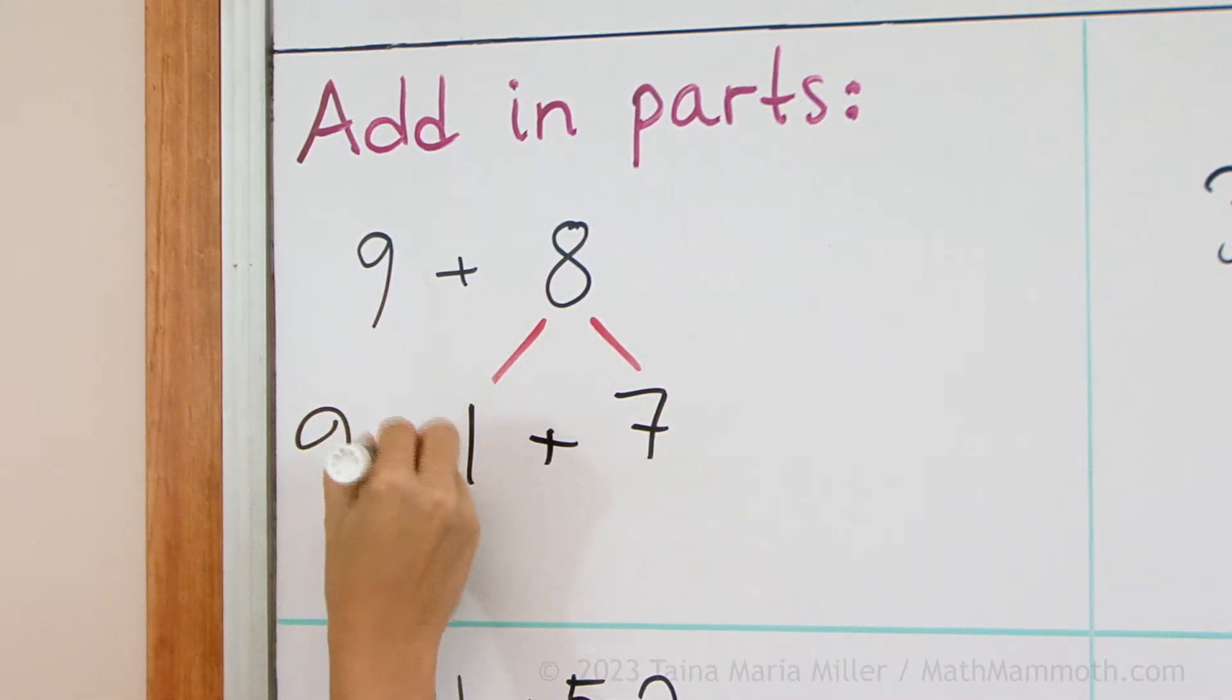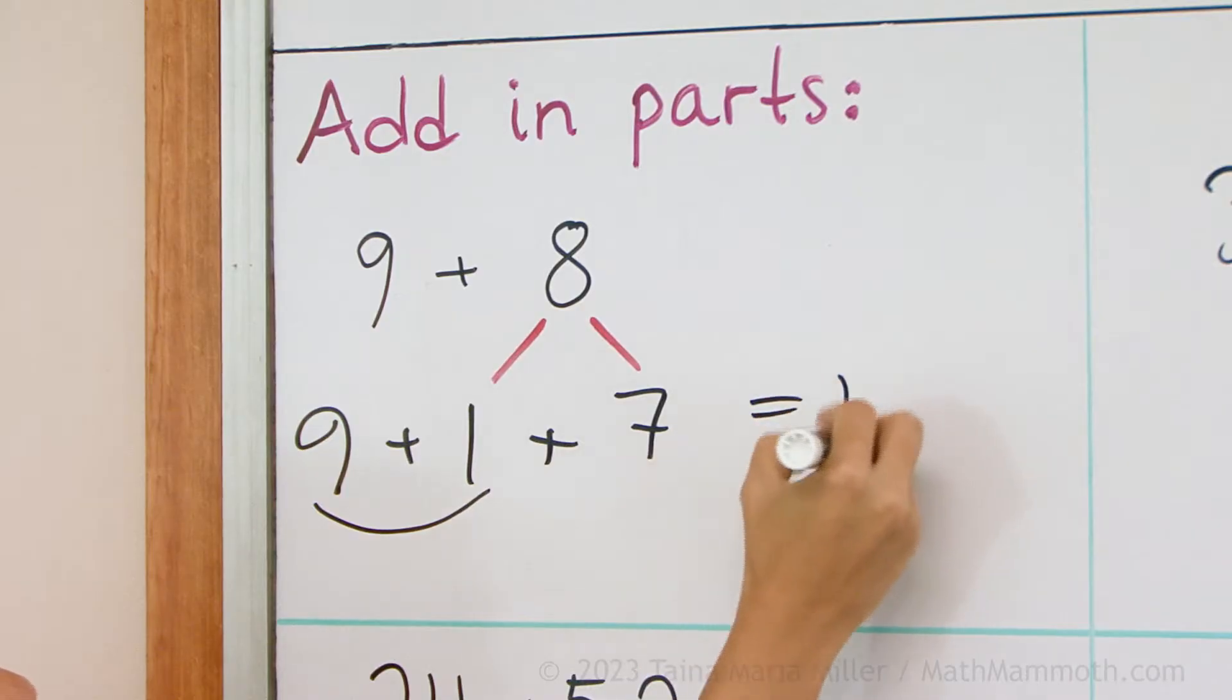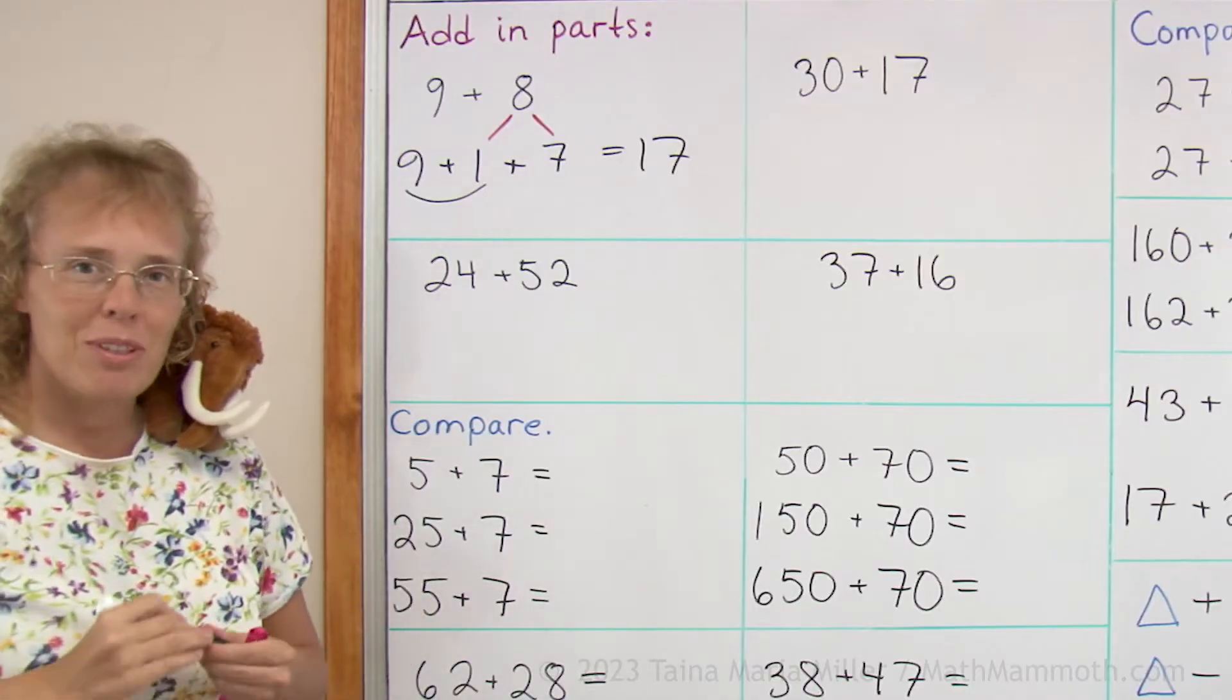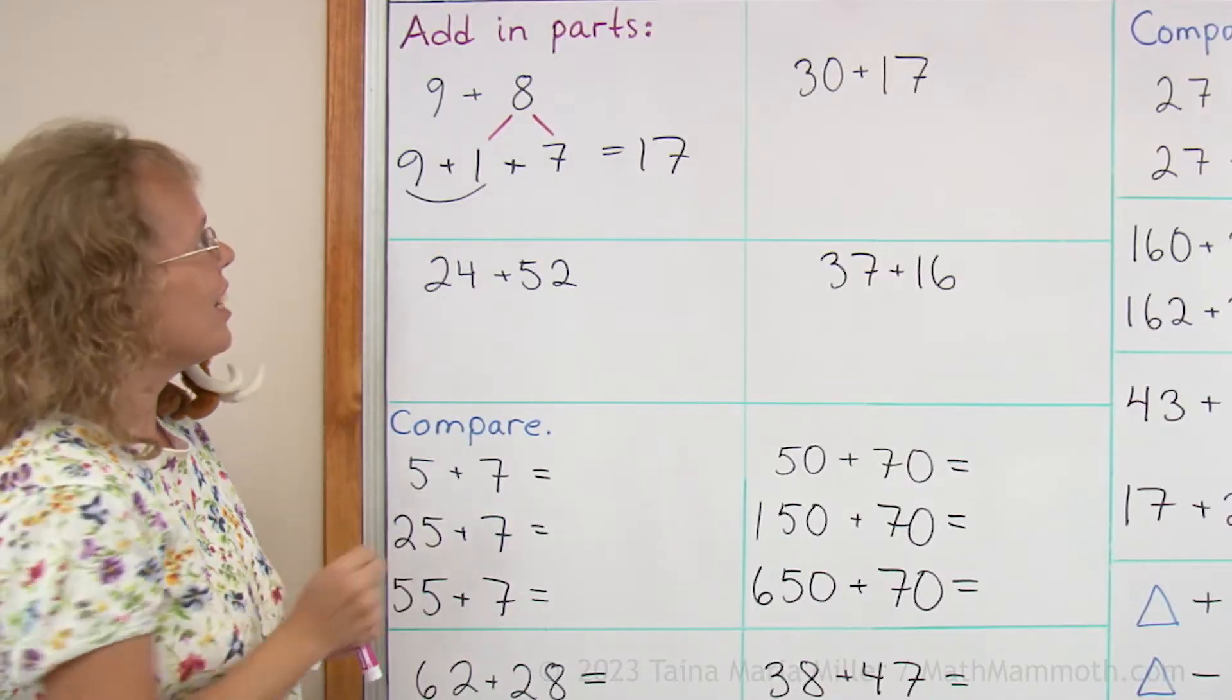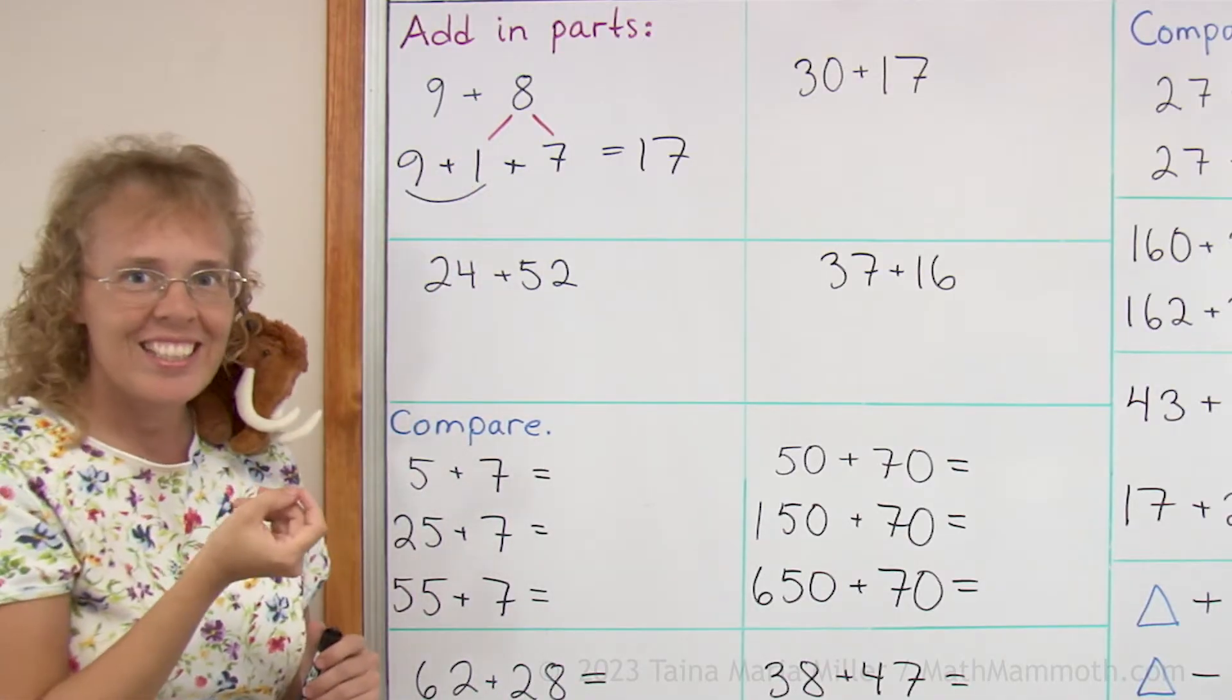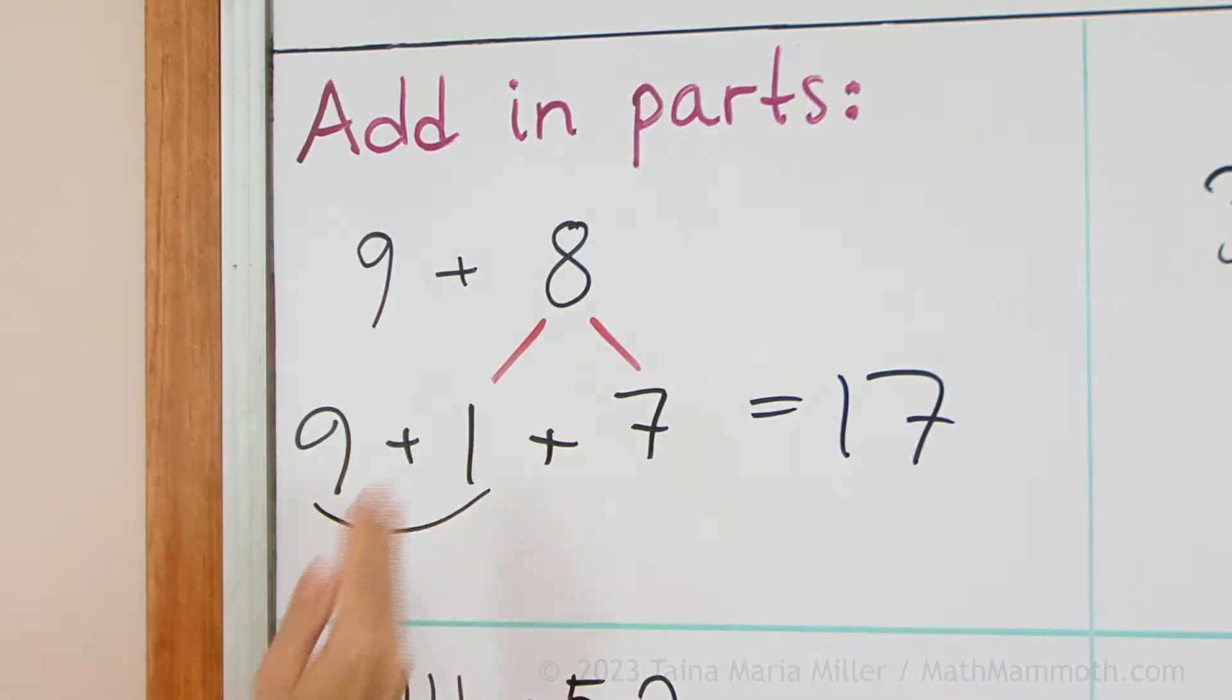And then we add 9 and 1 first, these two first, making 10. And then we get 10 and 7, which is 17. You might remember this also being the 9 trick from 2nd grade and 1st grade, where 9 wants to be 10, so it takes 1 from the 8. And so 9 and 1 then makes 10 and 8 is left just 7.